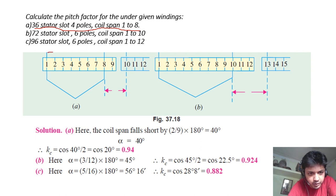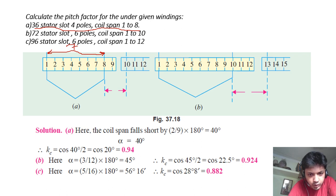But this short-pitched coil span is 1 to 8, that is a span of 7. So the coil is short-pitched by 9 − 7 = 2 slots. Therefore α = (2/9) × 180° = 40°. The pitch factor is Kc = cos(40°/2) = cos(20°) = 0.94.